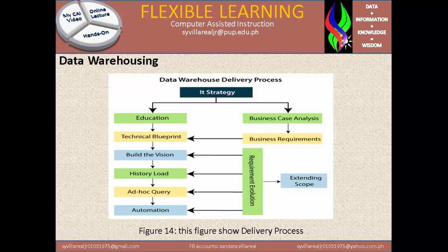In figure 14, this figure shows the delivery process: IT strategy, education, technical blueprint, build division, history load, ad hoc query, automation, and the finished product of the program. On the other side: business case analysis, business requirements, requirements evolution, and extending scope. The requirements evolution goes directly to the build division, history load, ad hoc, and automation. Every business has its part in technology.